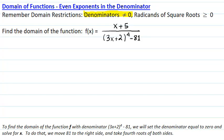To find the domain of the function f with denominator 3x plus 2 to the 4th minus 81, we will set the denominator equal to zero and solve for x. To solve this equation, we will move 81 to the right side, so we will get 3x plus 2 to the 4th equals 81, and then we will take 4th roots of both sides.